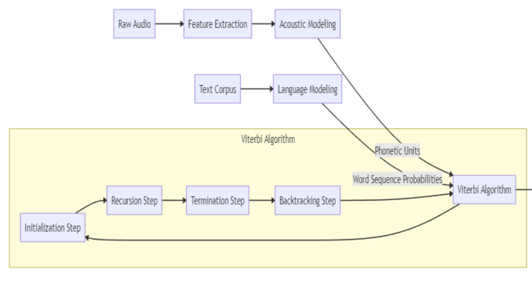In the context of speech recognition, the hidden states could represent the phonemes — distinct units of sound — and the observations could be the acoustic signals we record. A hidden Markov model is used to model the probability distribution of different phonemes, giving rise to specific acoustic signals. The Viterbi algorithm comes into play during the decoding stage of the ASR pipeline in Kaldi. Given a sequence of acoustic signals as input, the algorithm finds the most likely sequence of phonemes, or more generally, words, that produced those signals. This is known as Viterbi decoding.